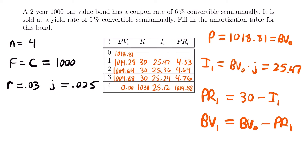One important note: in this example the yield rate was smaller than the coupon rate, meaning the bond was bought at a premium. If instead the yield rate were larger than the coupon rate, the bond would be bought at a discount (price below face value). In that case, the principal amounts would be negative because the interest amounts would exceed the coupon payments — until the last payment, where everything evens out and the book value still reaches zero.